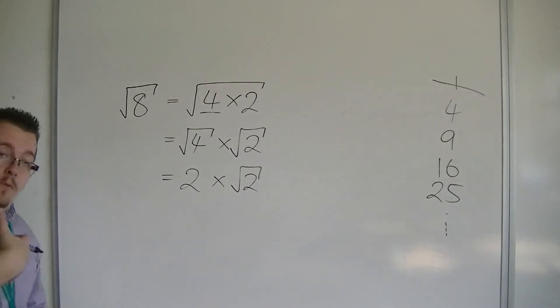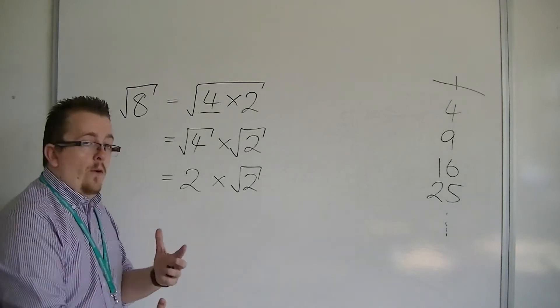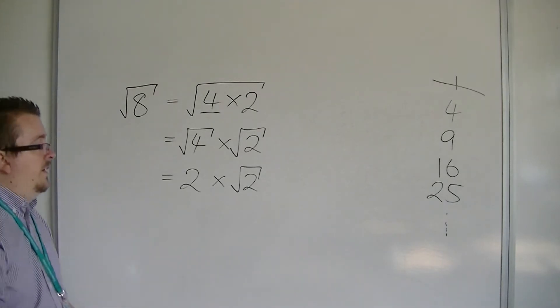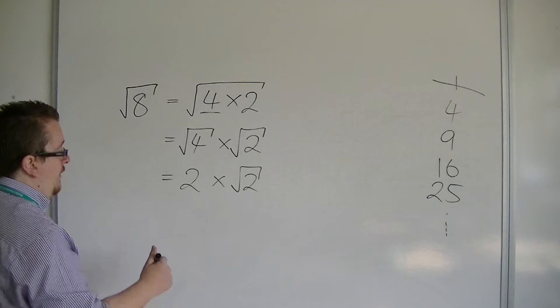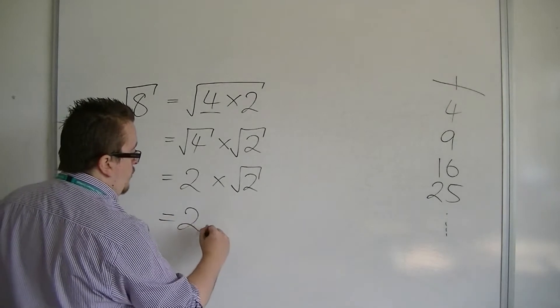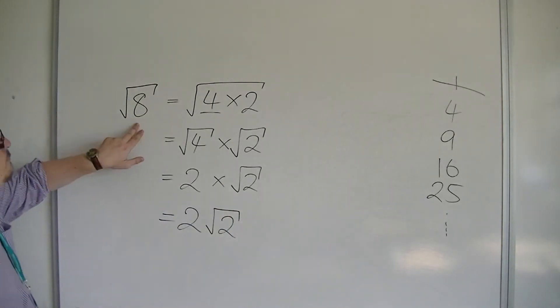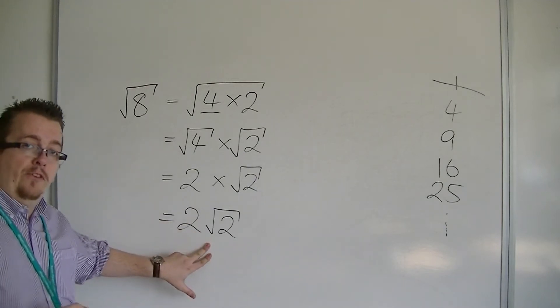And because, at this stage, we're starting to get to grips with how algebra should be presented, we don't really want to have to write that times symbol. So, we're going to write 2 root 2. So, the square root of 8 is the same as 2 root 2.